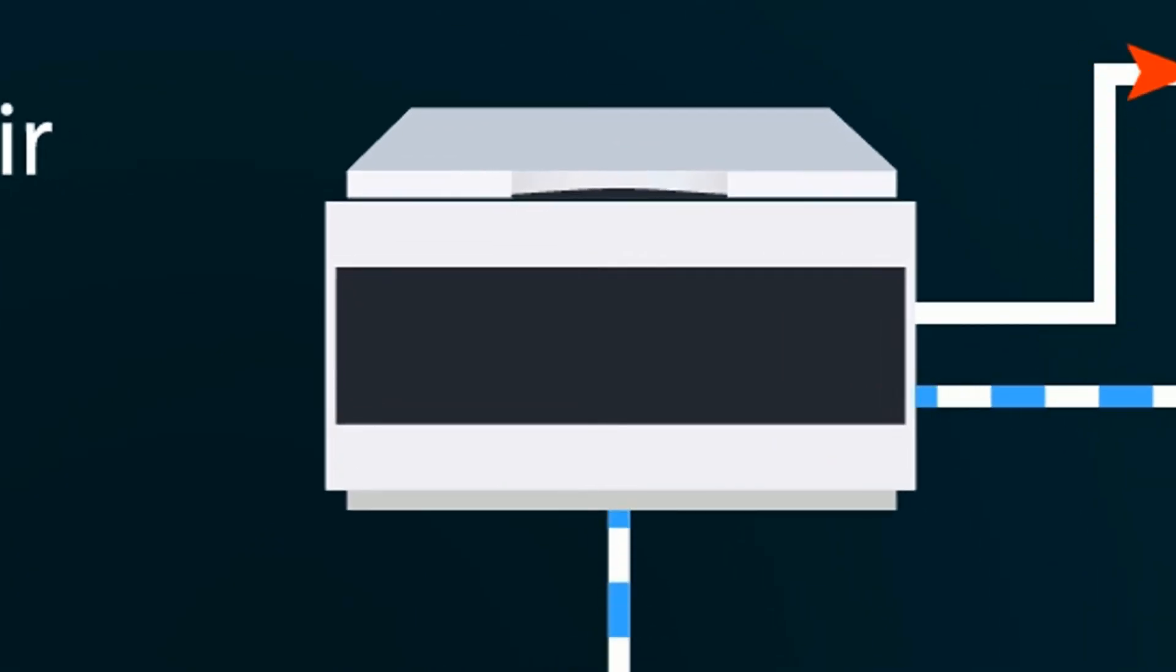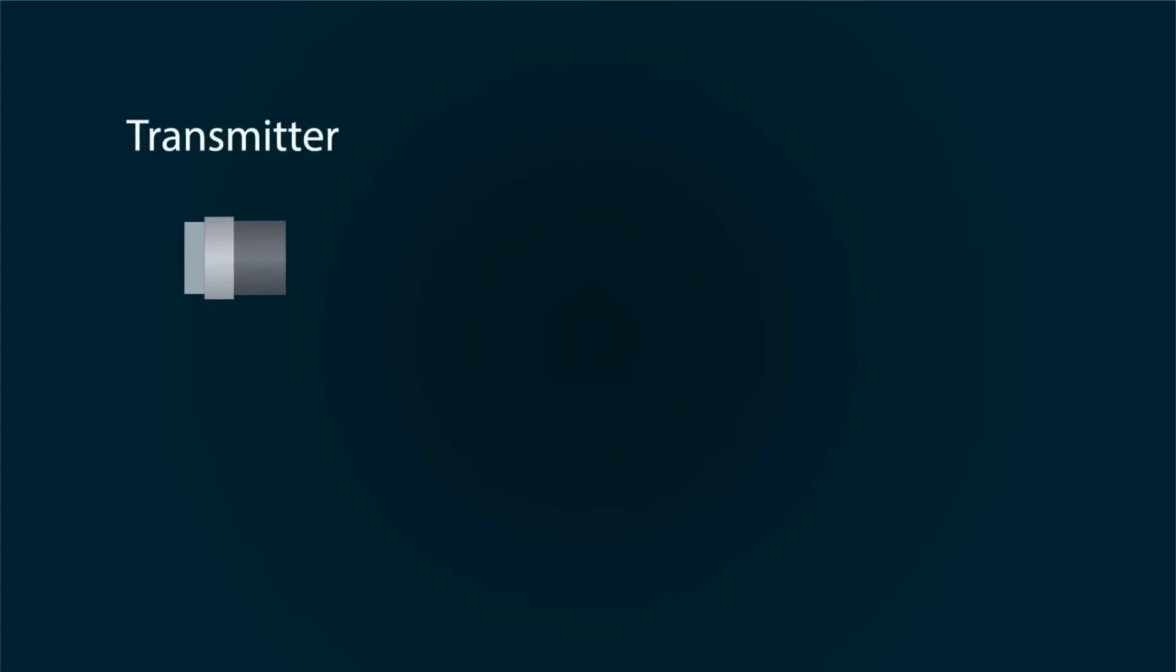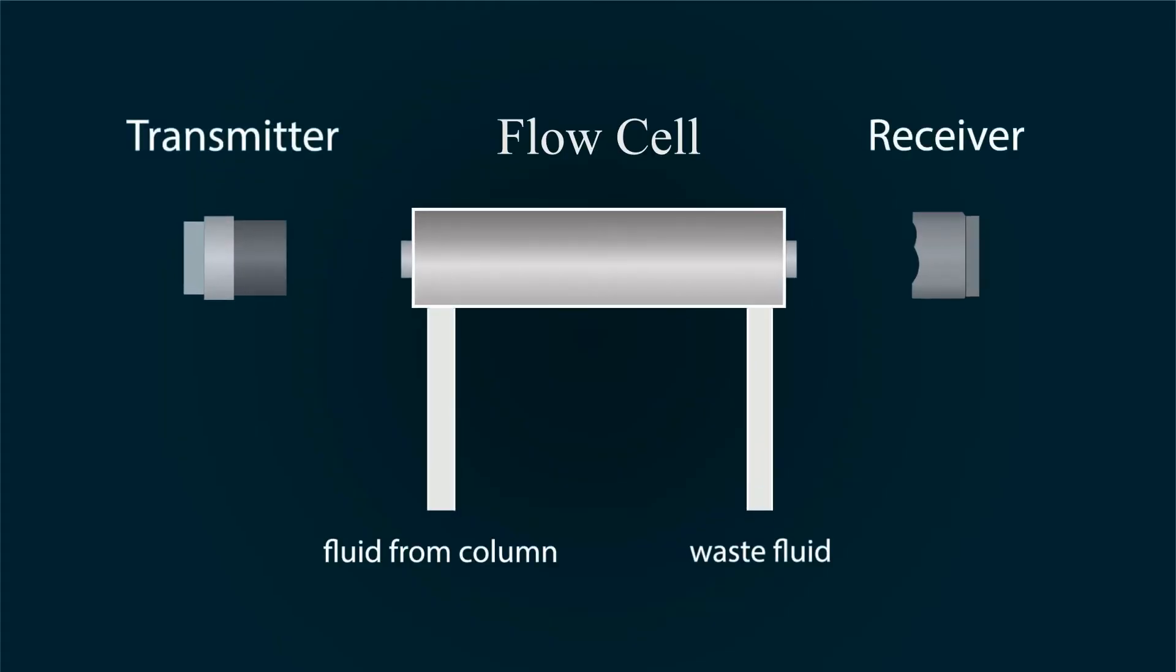In detector, a light is transmitted through the sample. You will see sample came from the fluid and the light is transmitted through the sample and the receiver got our readings.